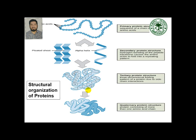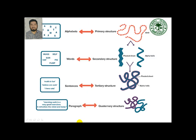Here again is a simple scheme: you see the bead-like structure, just like a thread-like structure. Then we get a folding, just like a coil that forms, and then we have a helix-like structure and a sheet-like structure. Then the distant amino acid residues come in close contact and form a tertiary structure, and finally we will have a quaternary structure.